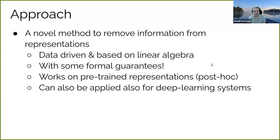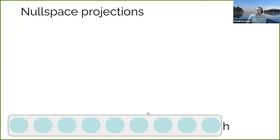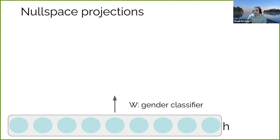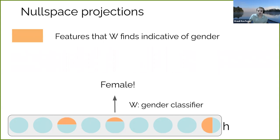Any questions on the general objective? If not, I'll start with the method itself. Say that H is the vector that BERT gives us for some input text. Sticking with the biography example, where we want to decide whether or not a person fits a given job, we can train a linear gender classifier on this representation — a probe which tries to predict the gender of the person from the representation of their biography. Let's say the gender classifier succeeds — it correctly predicts that this is a biography of a female.